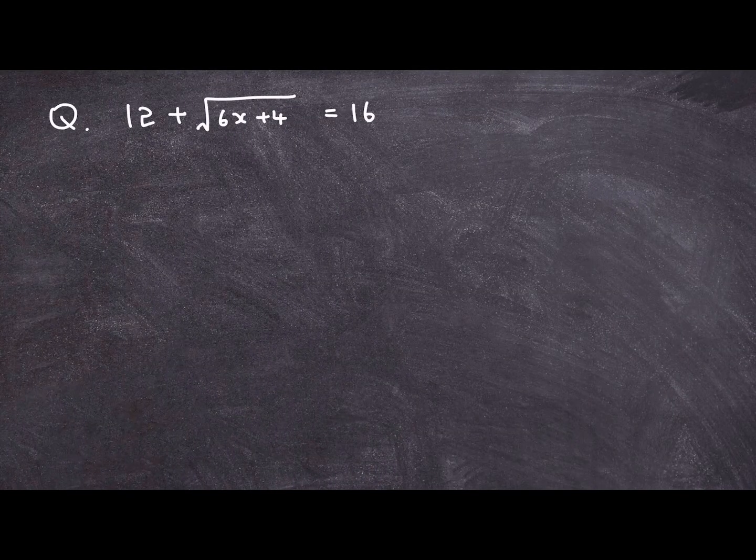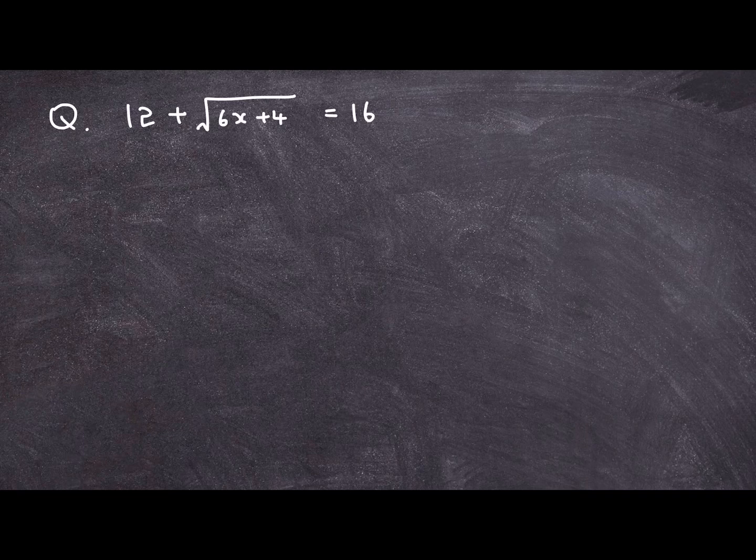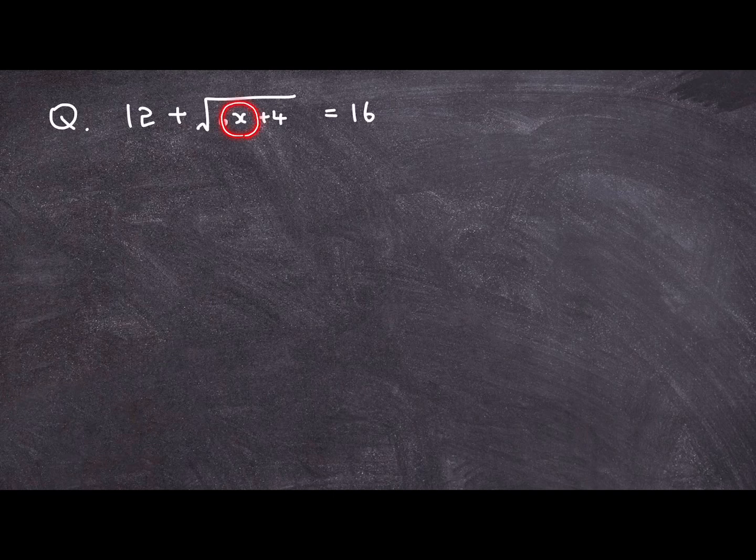I have 12 plus square root of 6x plus 4 is equal to 16. Now as with other equation problems, what I want to do is isolate this variable of x and move everything else to the other side of the equation.